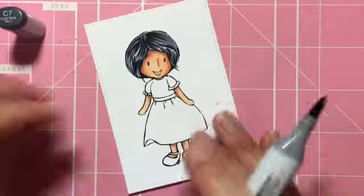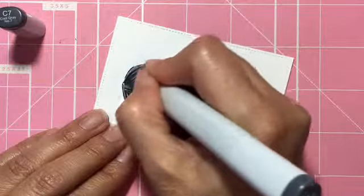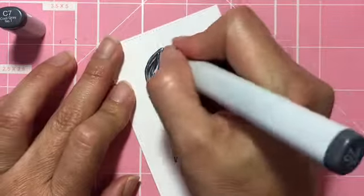Then I'm going back down with C7 and I'm going to go over the C9 that I just put down and just pull it out a little longer.